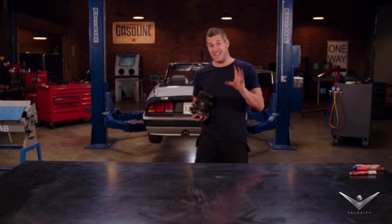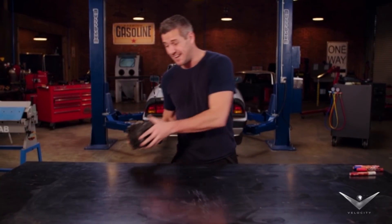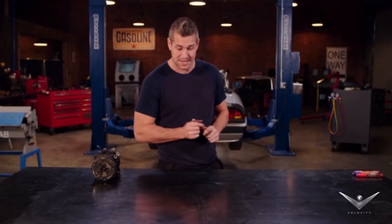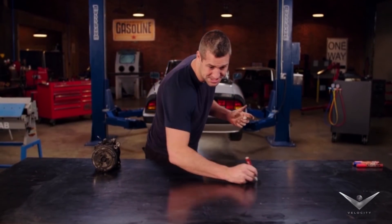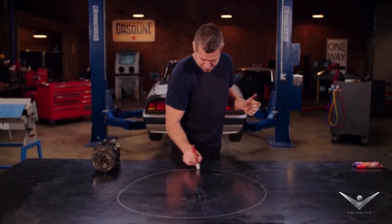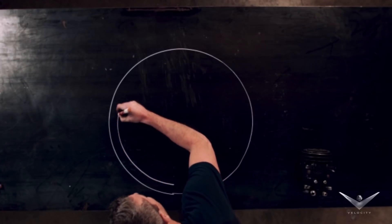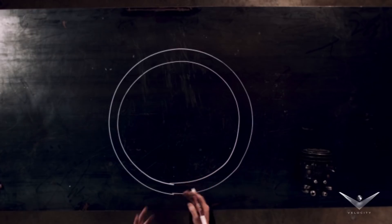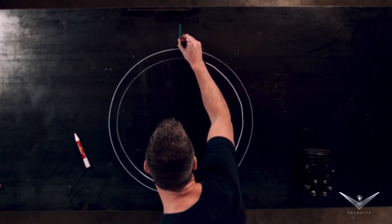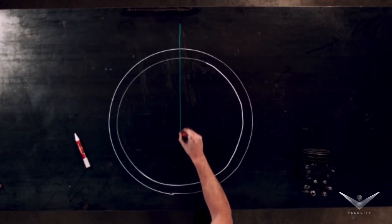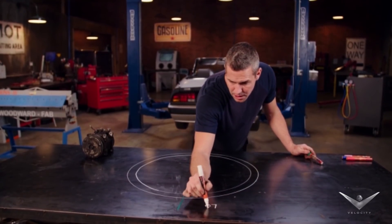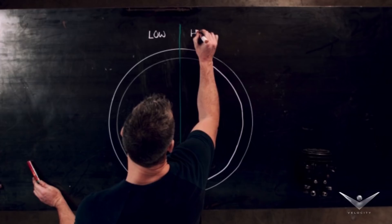How air conditioning works is really complicated — it involves an awful lot of science, so I'm going to try and make it really simple. Air conditioning is a sealed system, closed to atmospheric pressure, and inside that system is filled with refrigerant. That refrigerant switches from gas to liquid, and that loop exists in two halves: a low pressure side and a high pressure side.